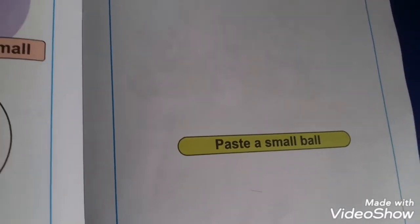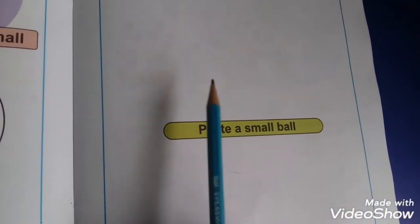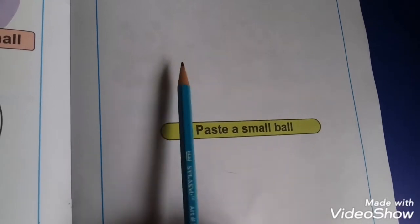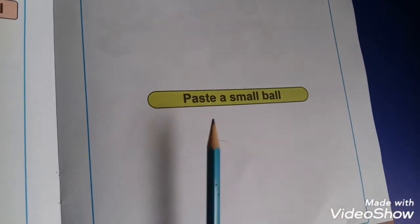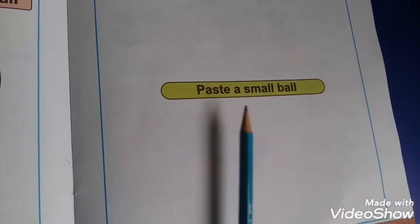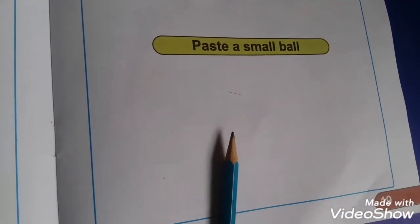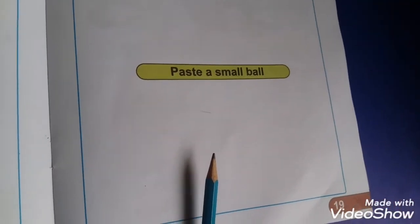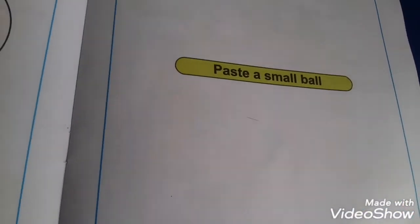Big and small are also mentioned here. You draw two things — one big — and here they mention paste a small ball. This is your homework page. You complete it at your home.